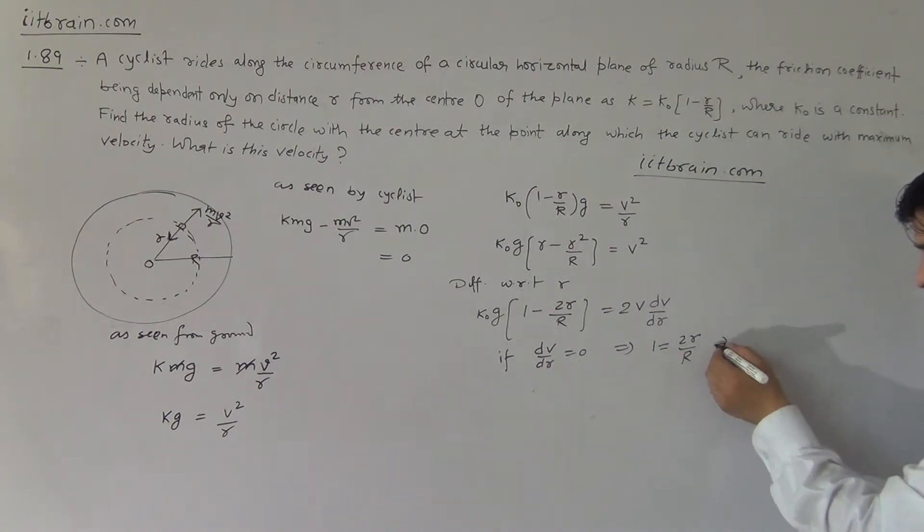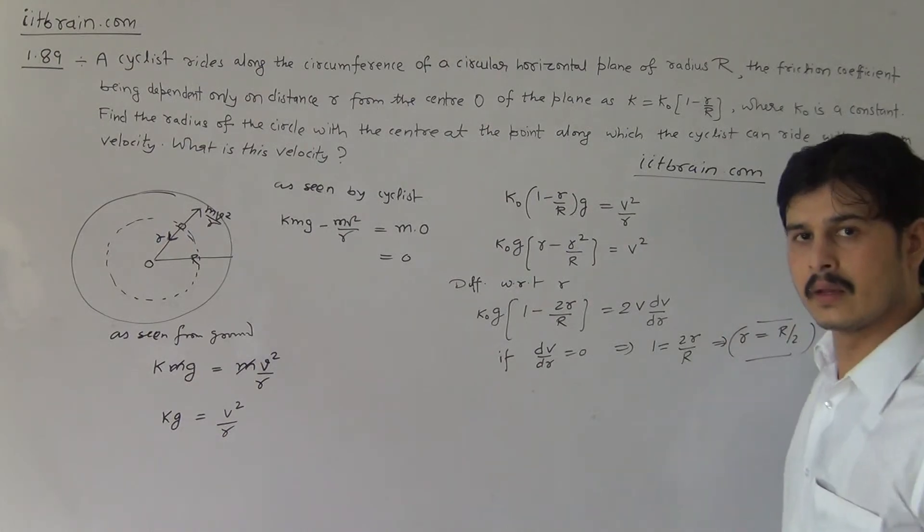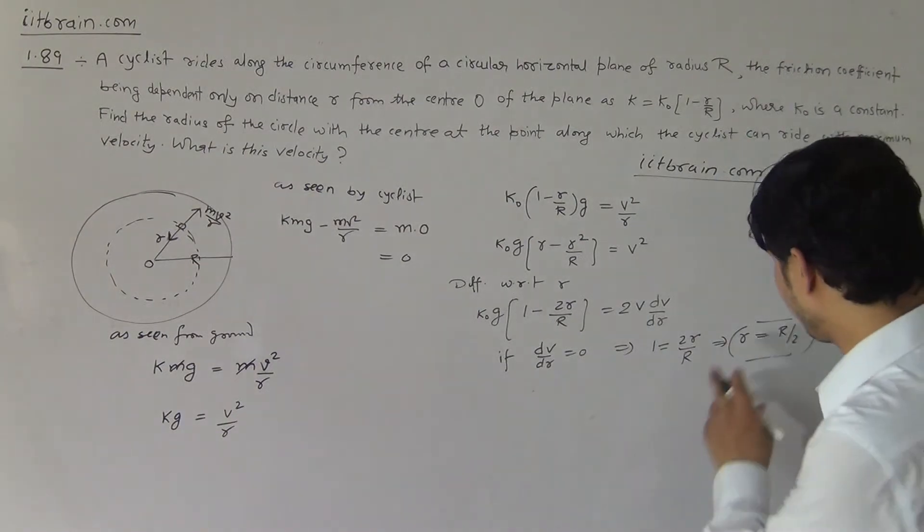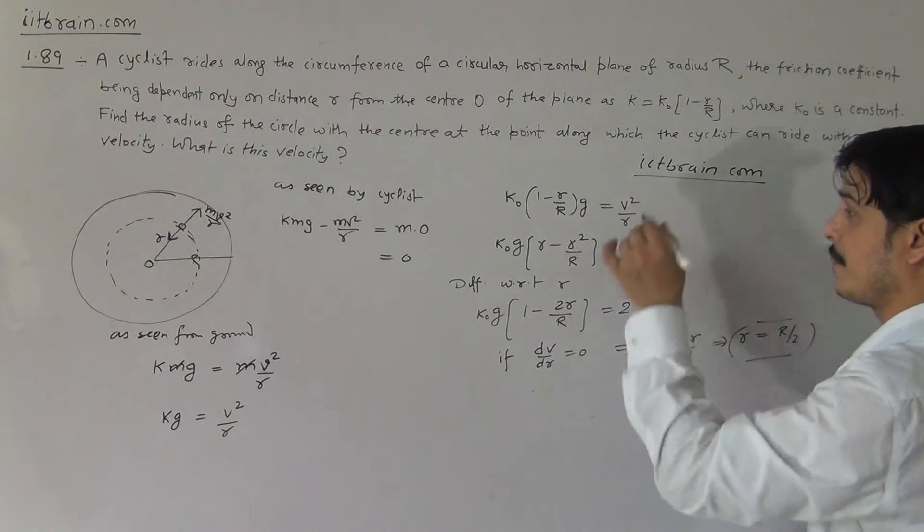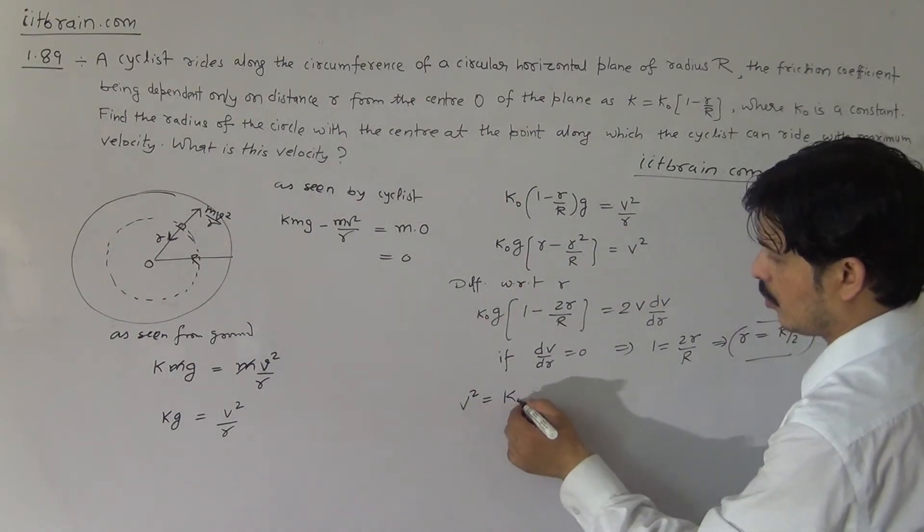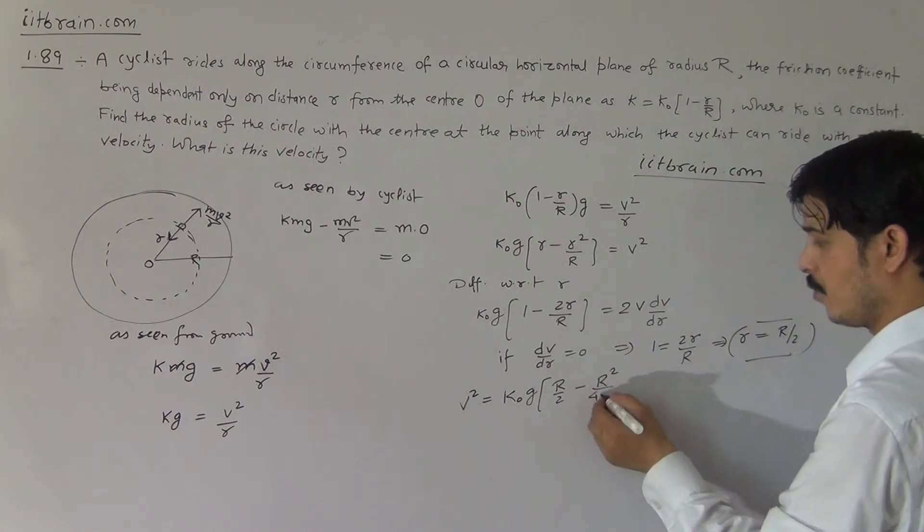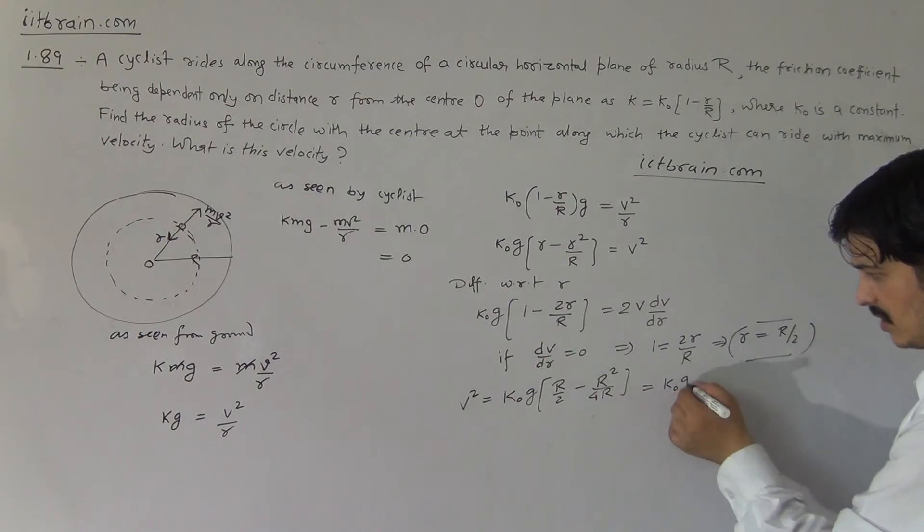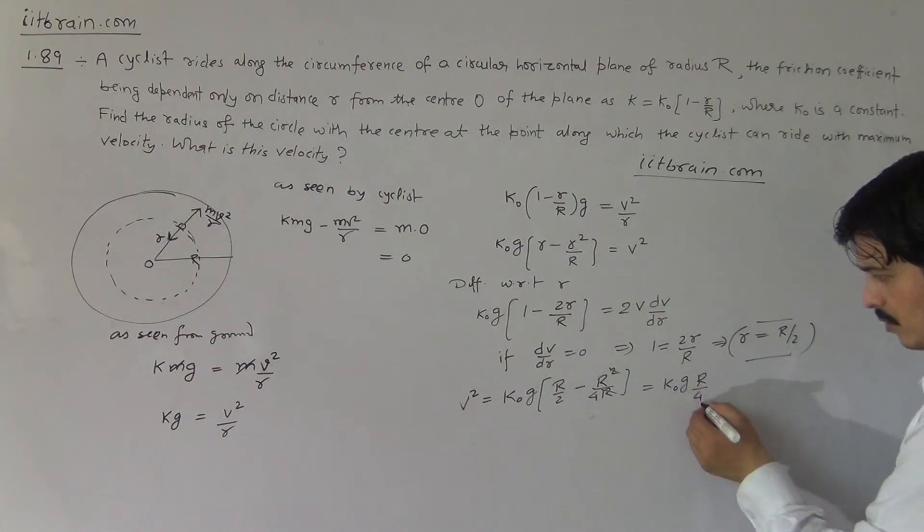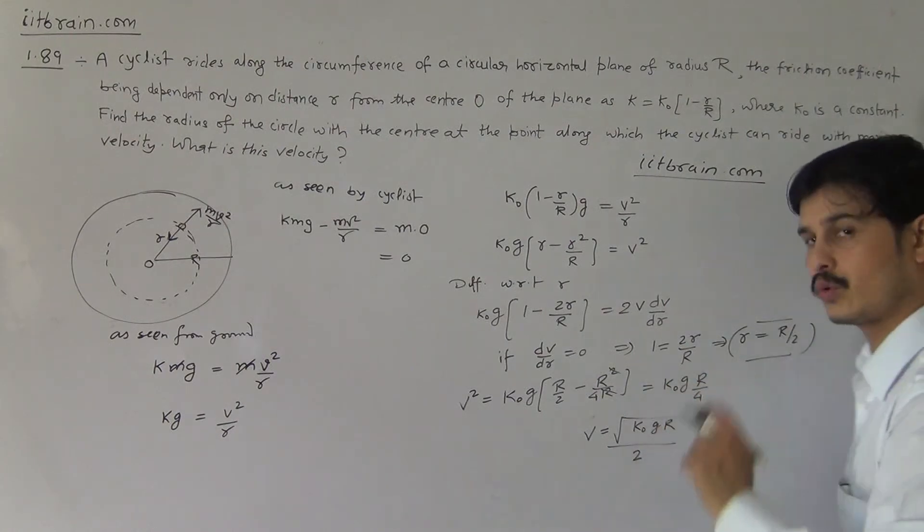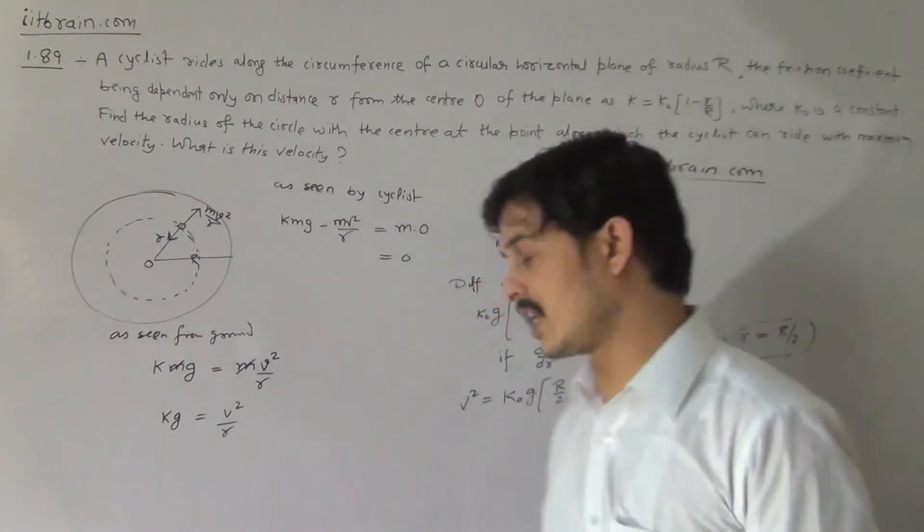So there is a path of radius R by two in which we can obtain the maximum velocity for the cyclist. If the radius will be R by two, then at that particular path, velocity square will become k naught g times R by two minus r square by four R, and on solving this we will get k naught g times R by four, and v equal to root of k naught g R upon two, which can be written as v equals root k naught g R by two.